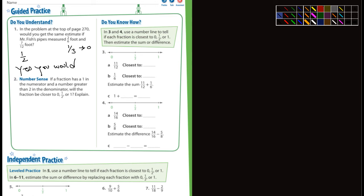All right, number two, it says if a fraction has a one in the numerator and the number is greater than two in the denominator, will the fraction be closer to zero, one-half, or one? Explain. A one in the numerator, okay, that's the top part. And a number greater than two in the denominator, that's going to be, so we could do a third, we could put a three there, that's greater than two.